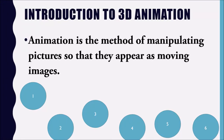Animation is the method of manipulating pictures so that they appear as moving images. If you look at the pictures I have in my scene — one, two, three, four, five, six pictures — imagine if we play those pictures within one second. What you actually see is the movement of the ball from one direction to another. You see a bouncing ball. That is the idea of animation.